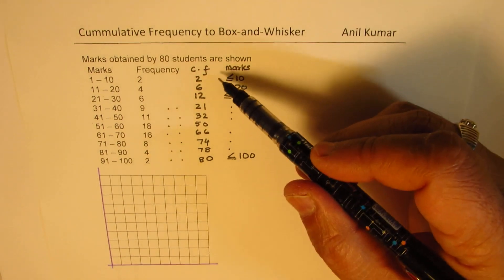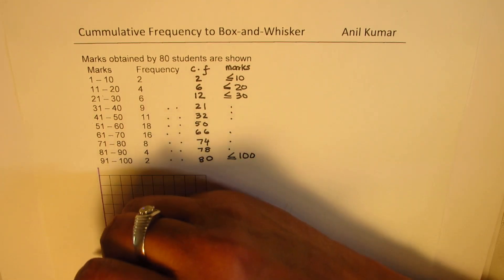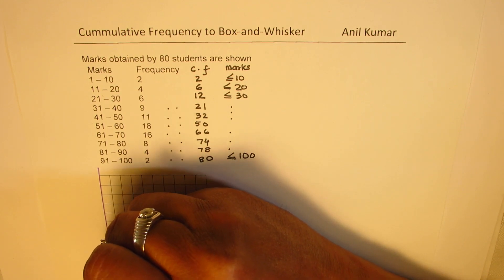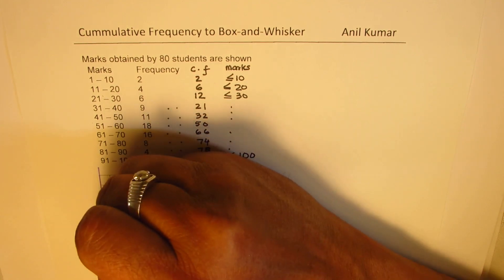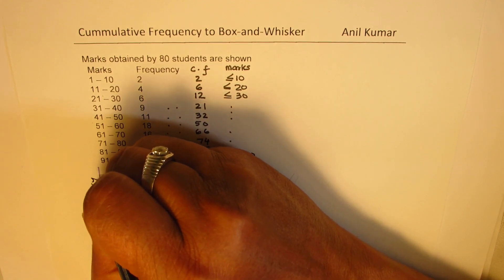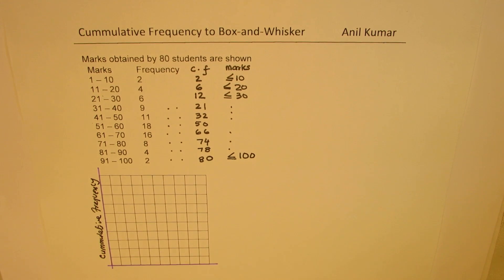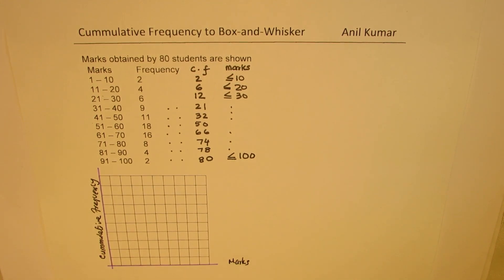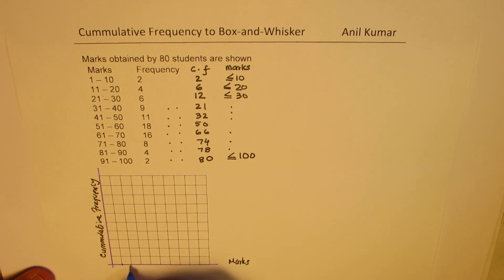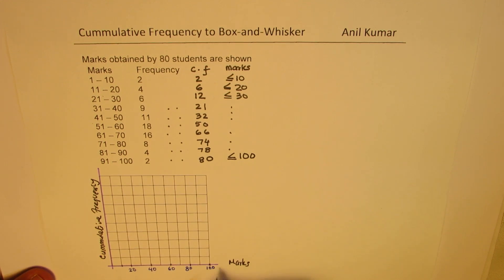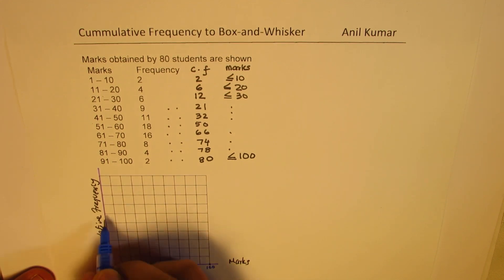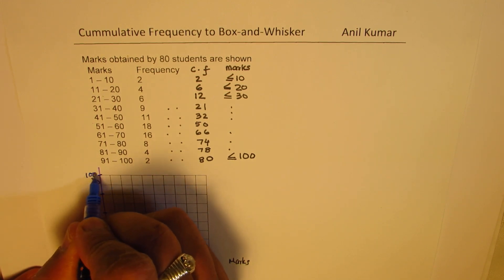We'll now plot these points here and see our graph. So, we'll plot this cumulative frequency on the vertical axis and marks on the horizontal axis. I've taken 10 by 10 graph. So, each mark here is 10 units. This is all 10 units. So, we'll mark this as 20, 40, 60, 80, and 100. Similarly, here, we have 20, 40, 60, 80, and 100. That is 100 for us.